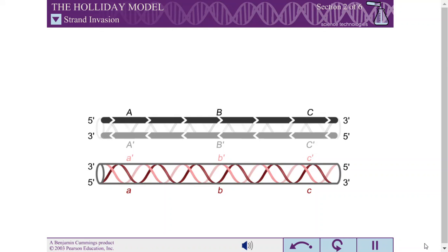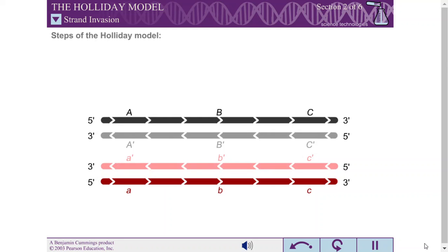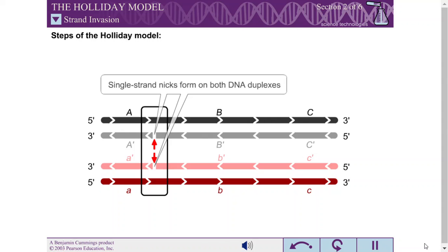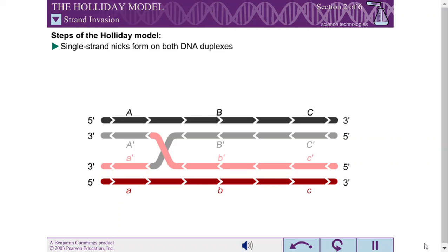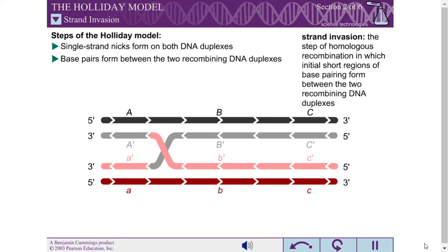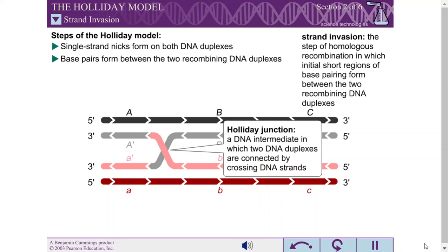In the first step of the Holliday model, single-strand NICs form at identical positions in each DNA duplex. DNA strands near the NIC sites peel away from their complementary strands and base pair with the homologous duplex. This step is called strand invasion. The DNA intermediate in which two DNA duplexes are connected by crossing DNA strands is called a Holliday junction.